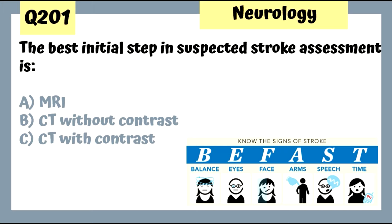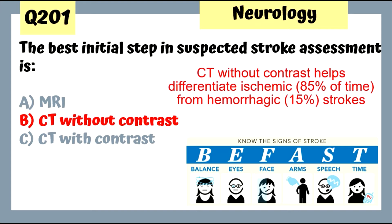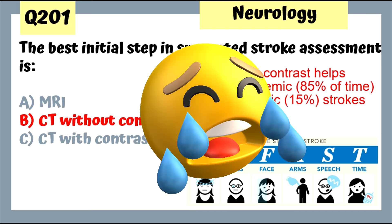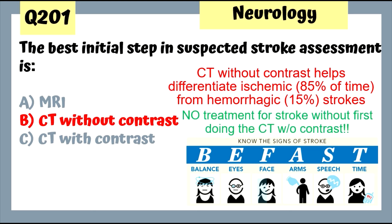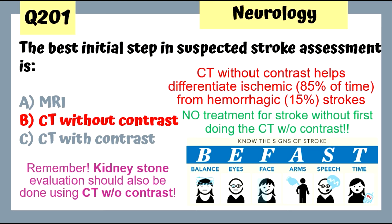The best initial step in suspected stroke assessment is MRI, CT without contrast, or CT with contrast? In suspected stroke we get a CT without contrast, and the reason is to help differentiate between ischemic and hemorrhagic stroke. 85% of strokes are ischemic, but in case it's hemorrhagic, if we give TPA it would worsen the bleeding. That's why we must get a CT without contrast before treating stroke. Kidney stone evaluation is also done with CT without contrast — important reminder for exam day.